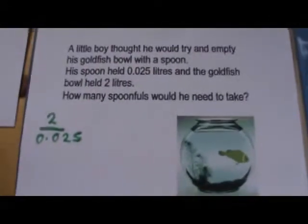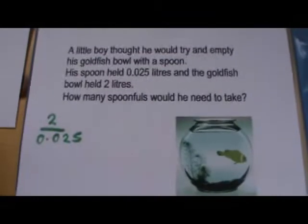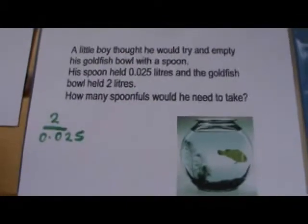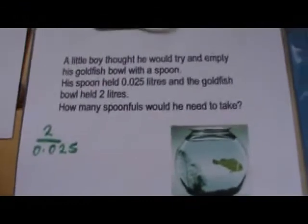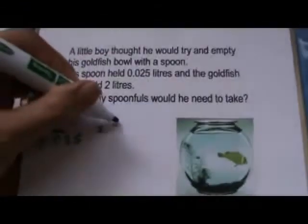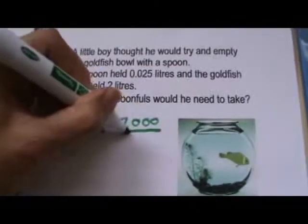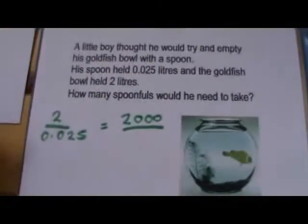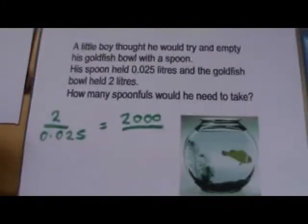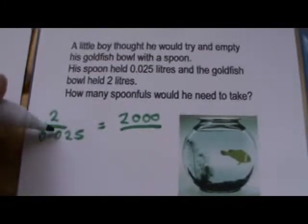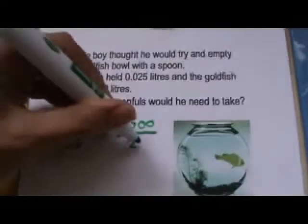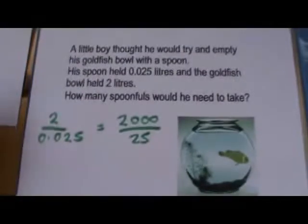Let's change the litres to millilitres. There are 1,000 millilitres in a litre, aren't there? So 2 times 1,000 would give us 2,000 millilitres. And if we multiply 0.025 by 1,000, the point will move three places along. So that gives us 25.